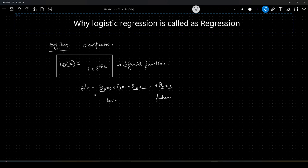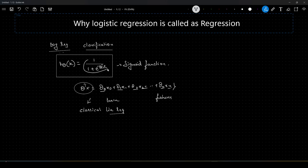This equation, if you look at it carefully, this is the equation for classical linear regression, but how can the same thing be used for logistic regression with such a small modification?